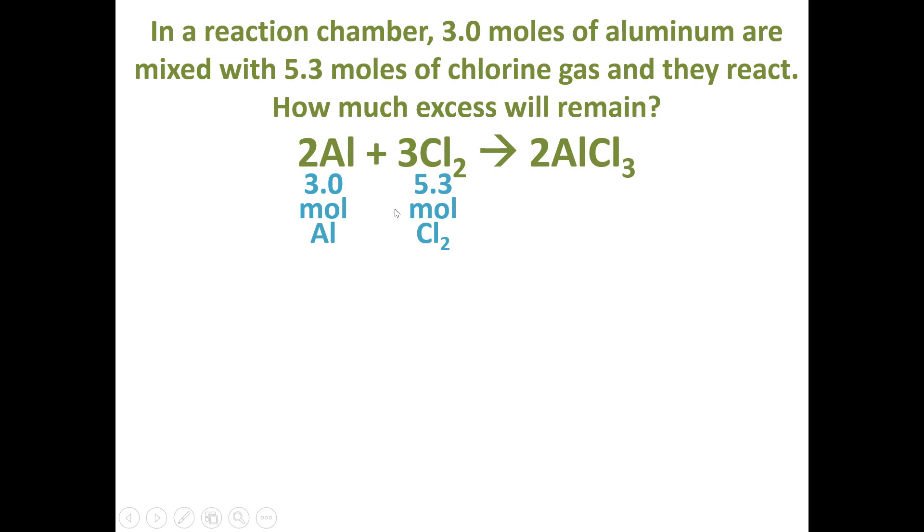We can choose one of these numbers, doesn't matter which one. In this example I'm going to start off with the 3 moles of aluminum. If we had 3 moles of aluminum, then we are going to calculate how much chlorine gas we need for a complete reaction to form aluminum chloride. We start off with 3 moles of aluminum over 1, and then we use a mole-to-mole ratio from the coefficients between aluminum and chlorine.